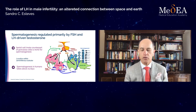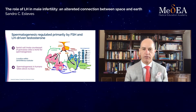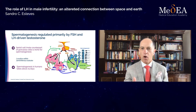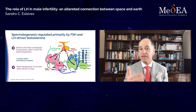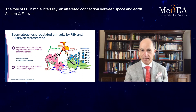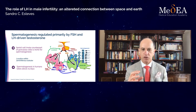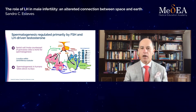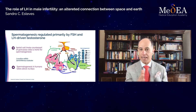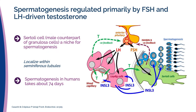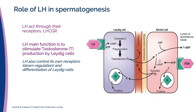Everything we do for our male infertility patients in terms of medication or any intervention to improve spermatogenesis — it's important to understand that spermatogenesis takes about 74 days in humans. So we need to wait that period of time to fully appreciate any intervention we give to our patients.